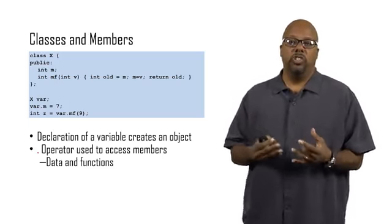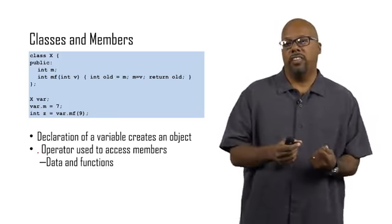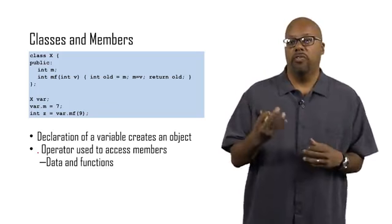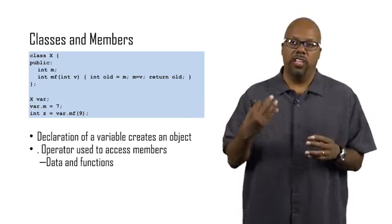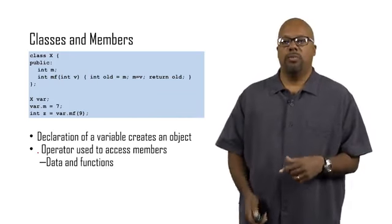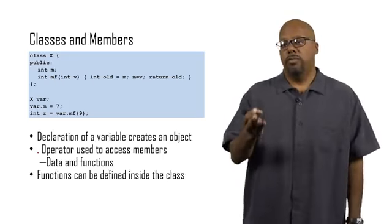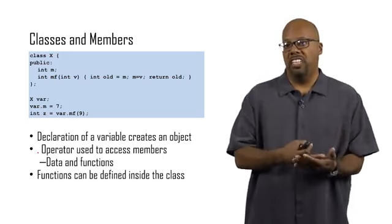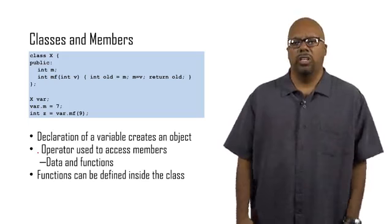And the way you refer to the members is with this dot operator. So the data and the function, you refer to them with the dot operator, and you see we do that var.m. And what's to the left of the dot tells you, this is where you're going to get the m from. You're going to get it from var. And then var.mf, look for var, the class that's part of, that's the mf that we're going to use. So the dot operator's important for referencing these things. Functions can be defined inside the class, so we're doing that here. We define variables inside the class, int m, but we can also define functions int mf or any number of functions that we want to define.